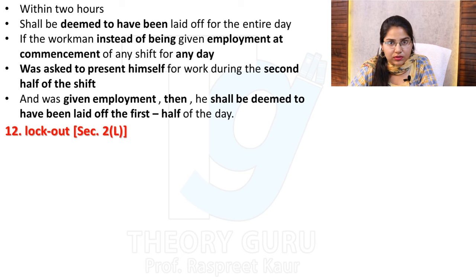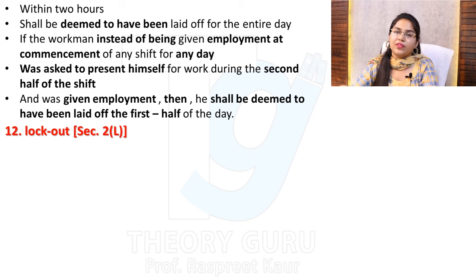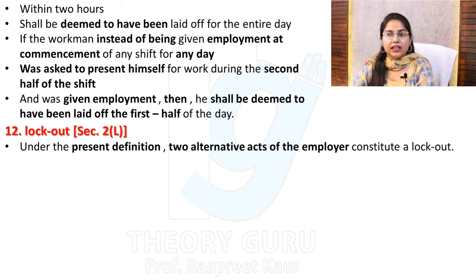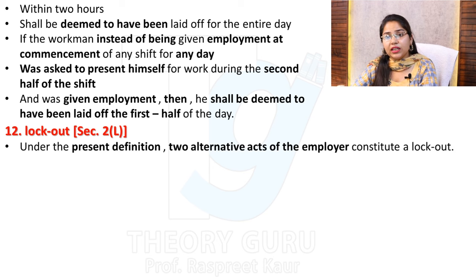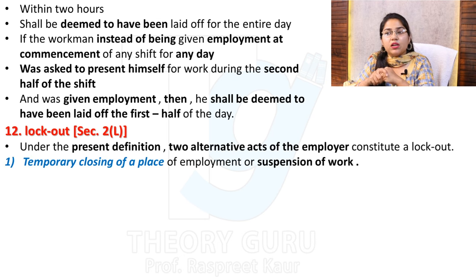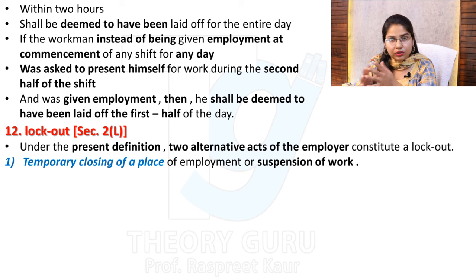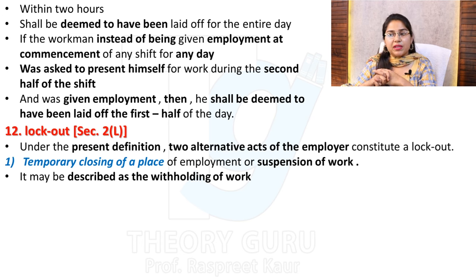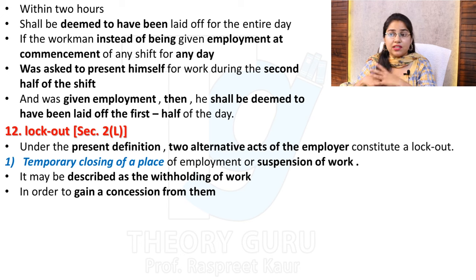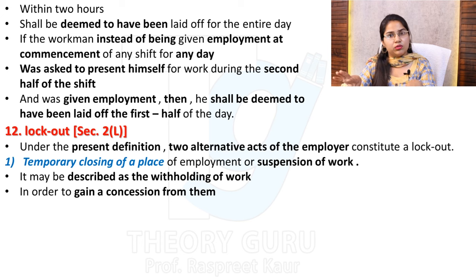Next we have Lockout, Section 2(L). Under the present definition, two alternative acts of the employer constitute a lockout. First: temporary closing of a place of employment or suspension of work. The employer has temporarily closed the employment place or suspended all the work. This may be described as the holding of work in order to gain a concession from the workers. The employer is saying he will not increase salaries or wages this year — he wants a concession from his workers, so he has locked out by temporarily closing the place of employment.